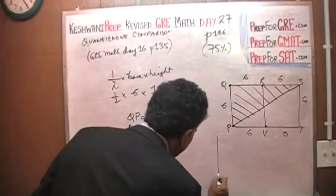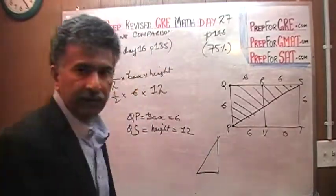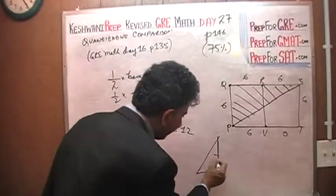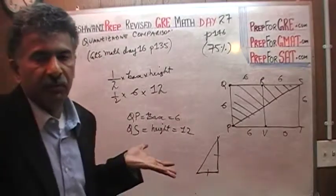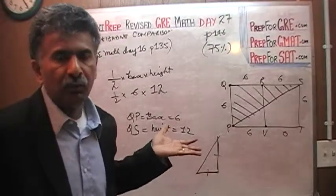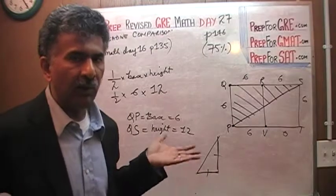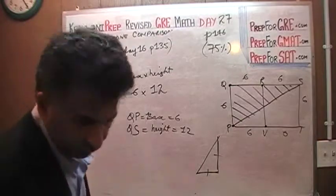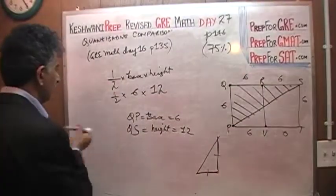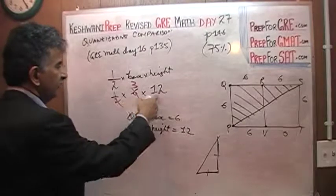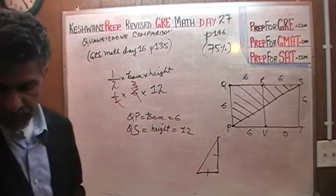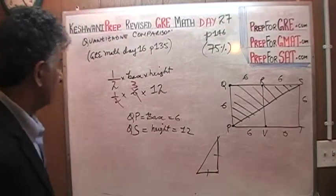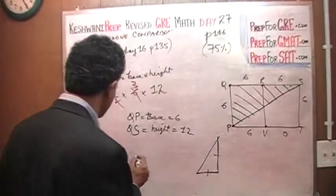The reason it makes no difference which side is base or height is because the two quantities are being multiplied — and if you have a right-angle triangle, multiplication is commutative. So simplifying: half of 6 is 3, times 12 equals 36. That is precisely what we are given in Column B, and therefore the answer is C.